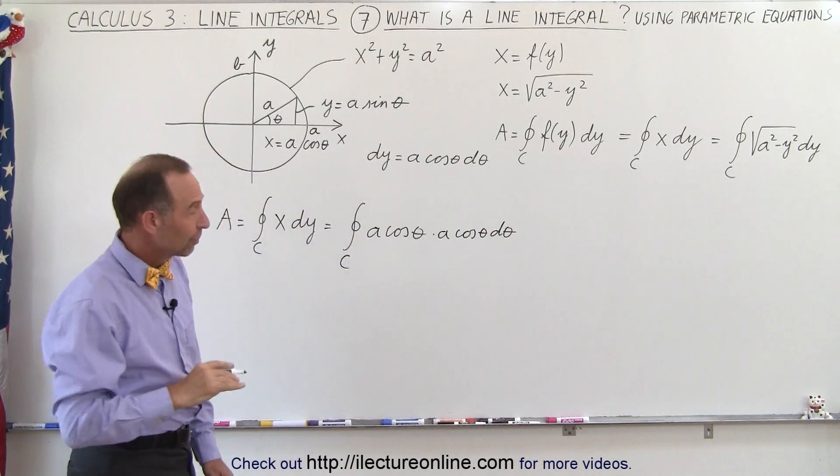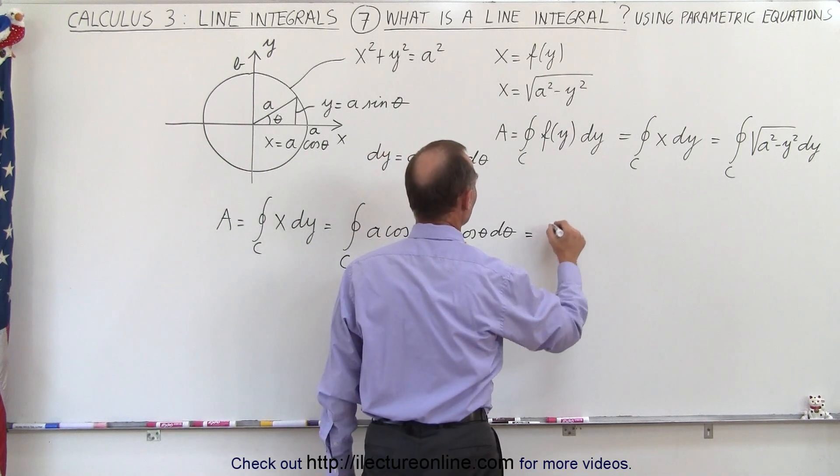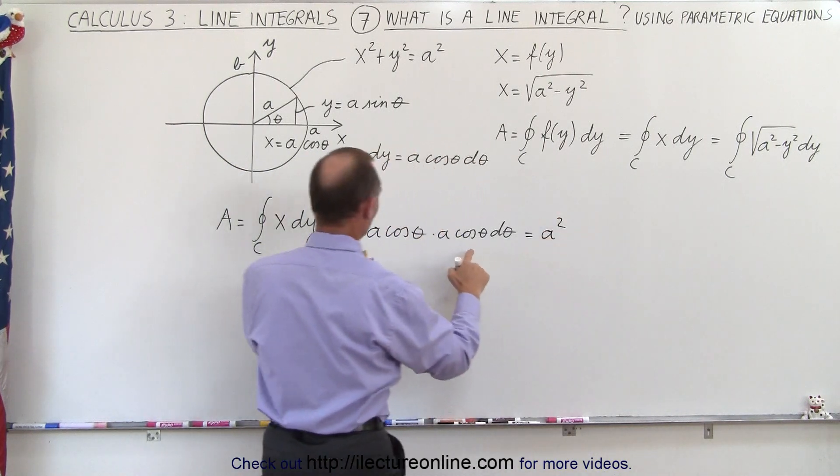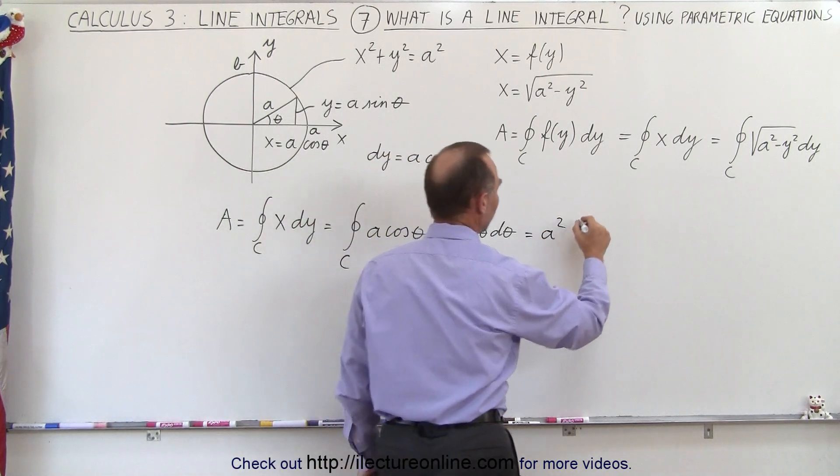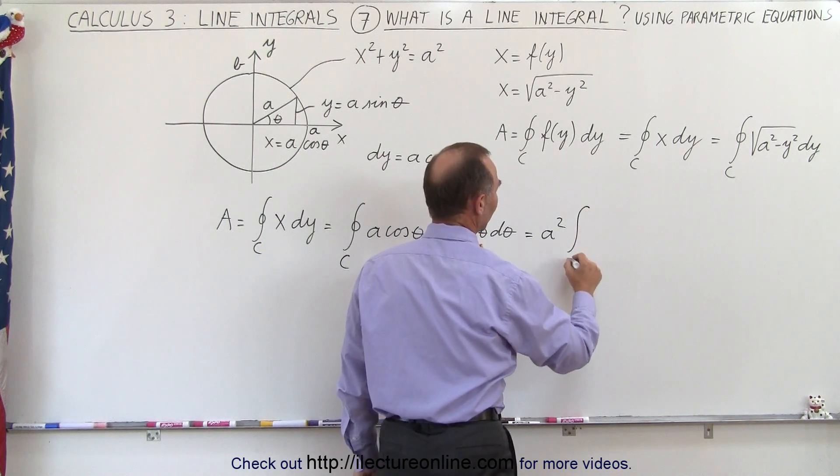And so this integral can be simplified a little bit. So now we're going to integrate this. We have a squared, because we have an a times the a, a squared, times the integral from 0 to 2 pi.